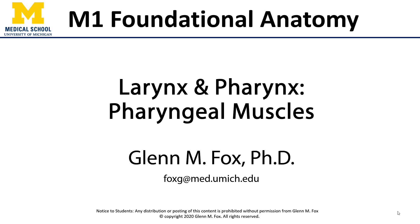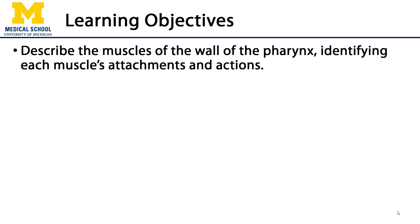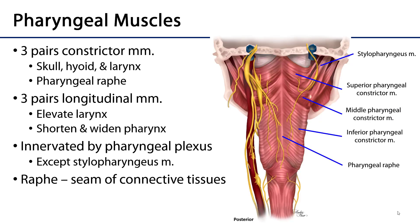Let's talk about the pharyngeal muscles. In this video we'll discuss the muscles of the wall of the pharynx, identifying each muscle's attachments and their actions. The pharyngeal muscles fall into one of two groups — each group has three muscles — so there are the constrictor muscles and the longitudinal muscles.